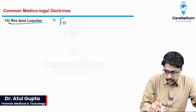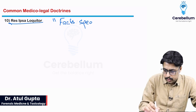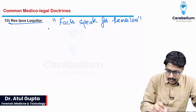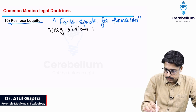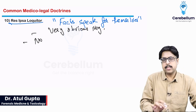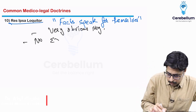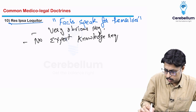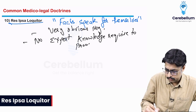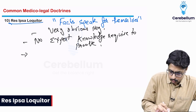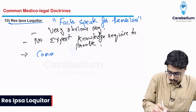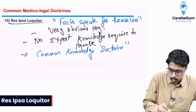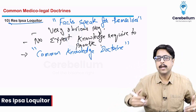Res ipsa loquitur means facts speak for themselves, or in simple terms, very obvious negligence. That means the negligence is so obvious that no expert knowledge or witness is required to prove it. It is also called the common knowledge doctrine — meaning any layman, using common knowledge alone, can determine that it is the negligence of the doctor.